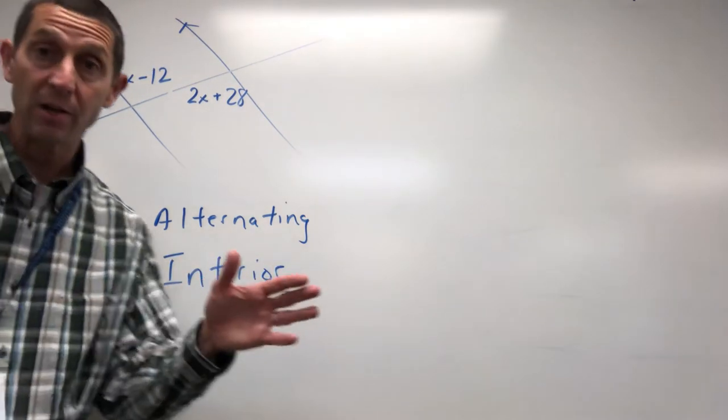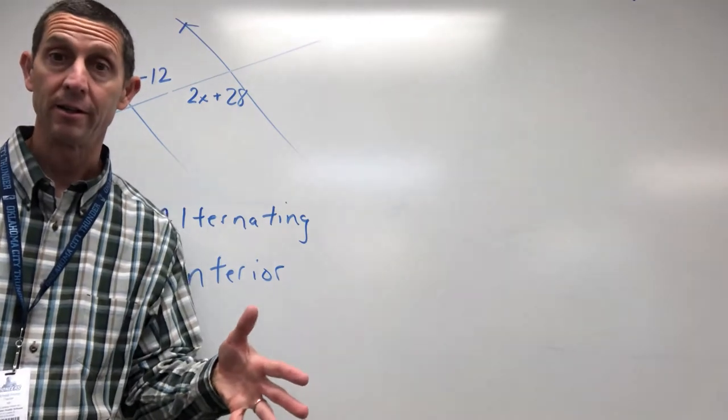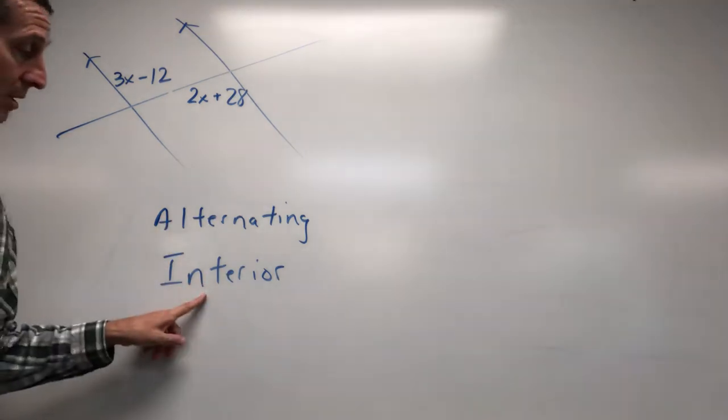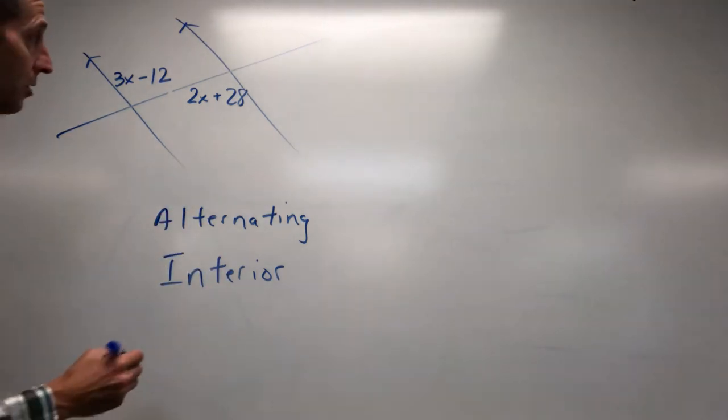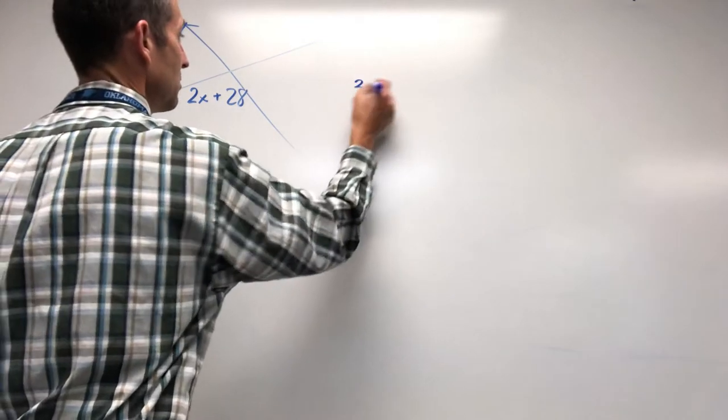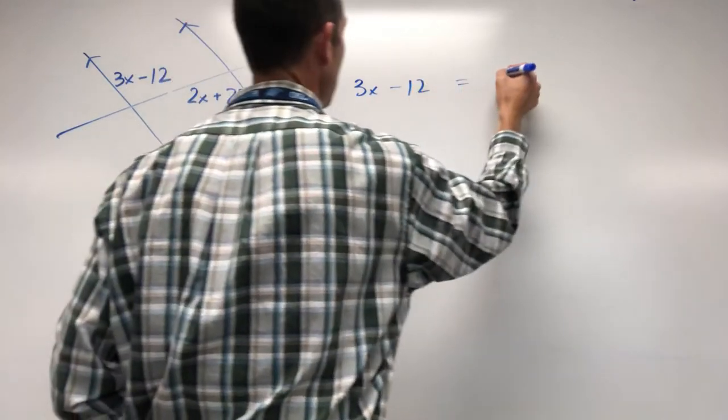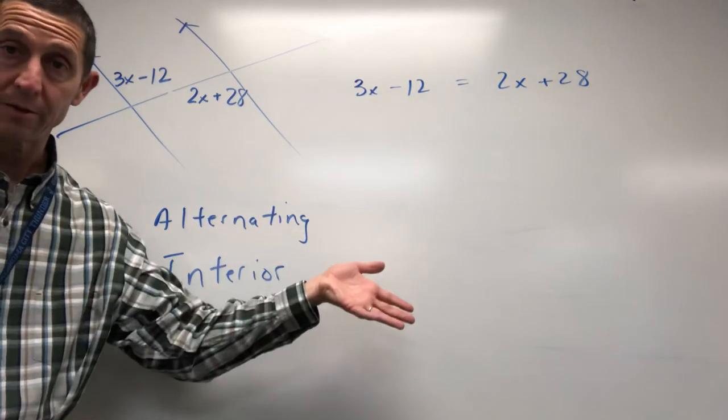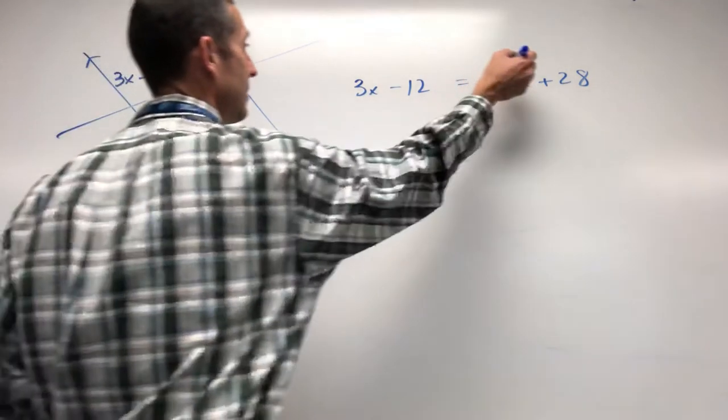And anytime that you have alternating interior, we just think, aha, set them equal to each other. Alternating angles, interior, equal to each other. So let's run it. Let's go 3x minus 12, set equal to 2x plus 28. So we've got one angle, set it to the other angle. Do a little bit of algebra.